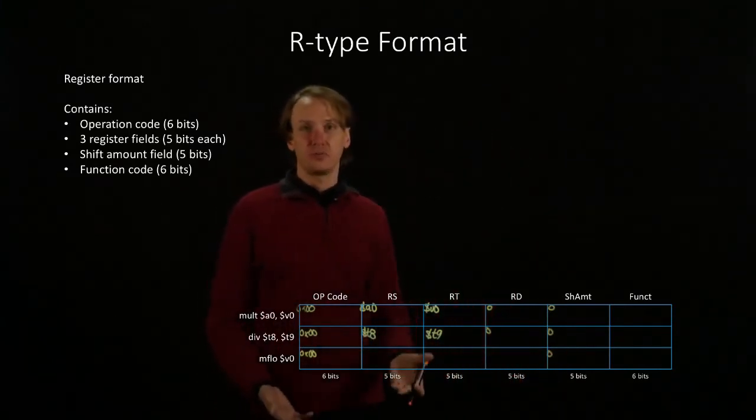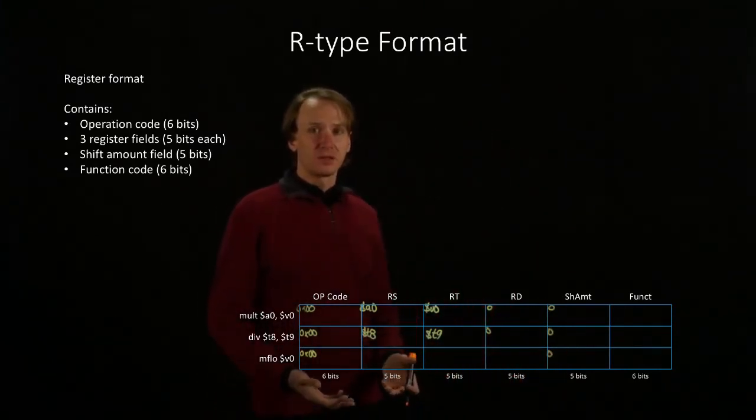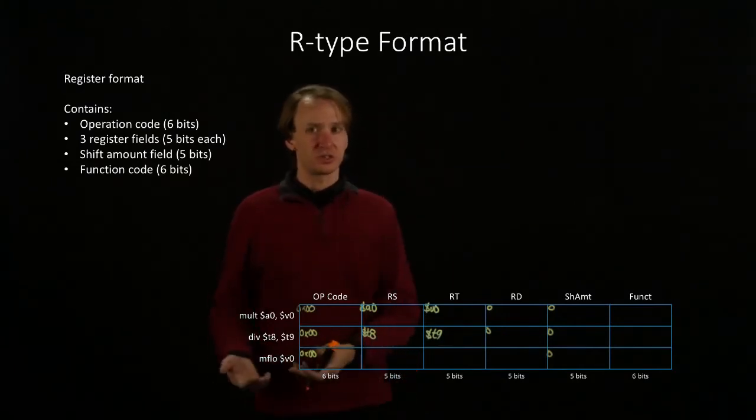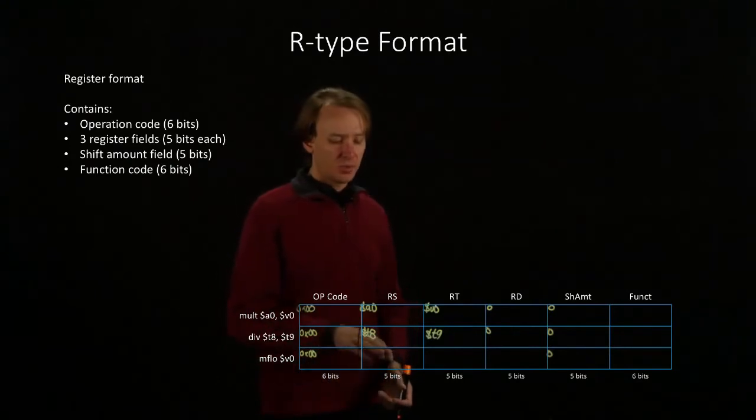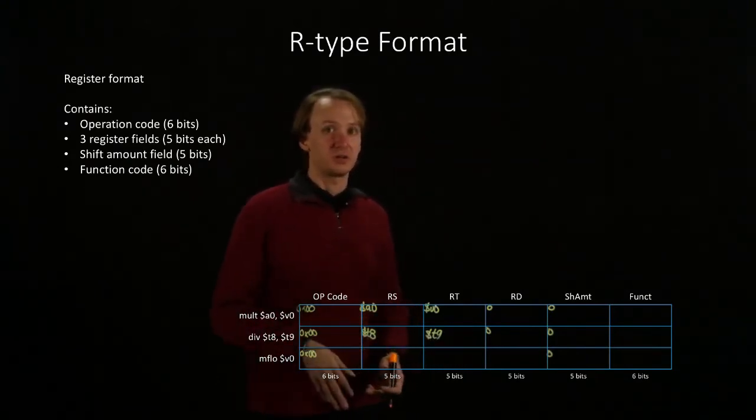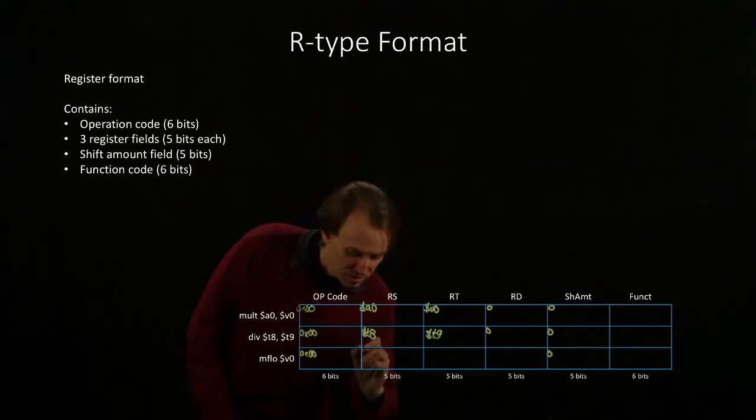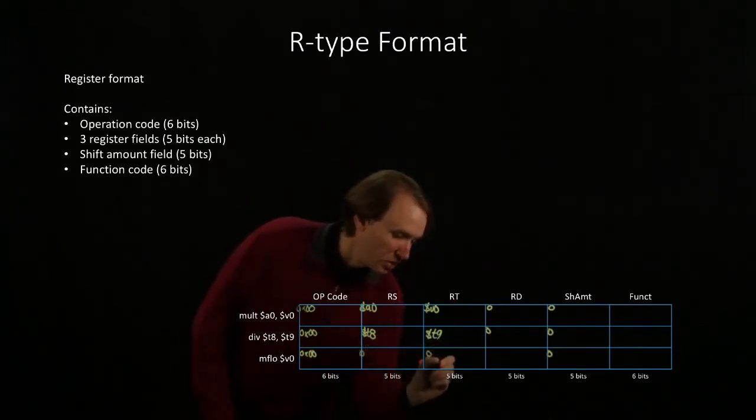Now I have the move from low instruction. This instruction doesn't have any source registers. Its source register is technically the low register, but we can't access that with one of the standard register fields. Instead, I will put in zero for both of those.